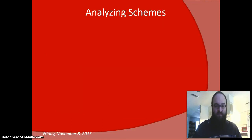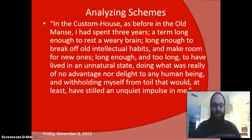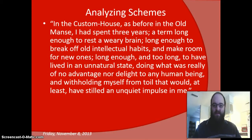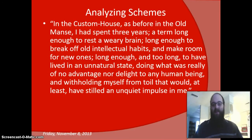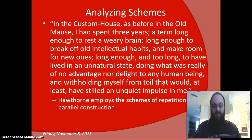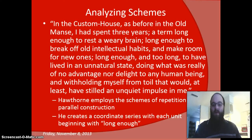Those are the same three questions as with tropes. Here's an example of a scheme from toward the end of the Custom House: 'In the custom house, as before in the old man's, I had spent three years — a term long enough to rest a weary brain, long enough to break off old intellectual habits and make room for new ones, long enough, and too long, to have lived in an unnatural state, doing what was really of no advantage nor delight to any human being.' Here Hawthorne employs the schemes of repetition and parallel construction, creating a coordinate series with three units, each beginning with the adverb phrase 'long enough.'